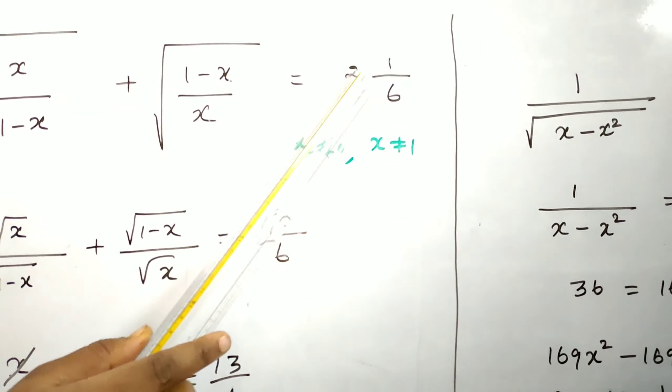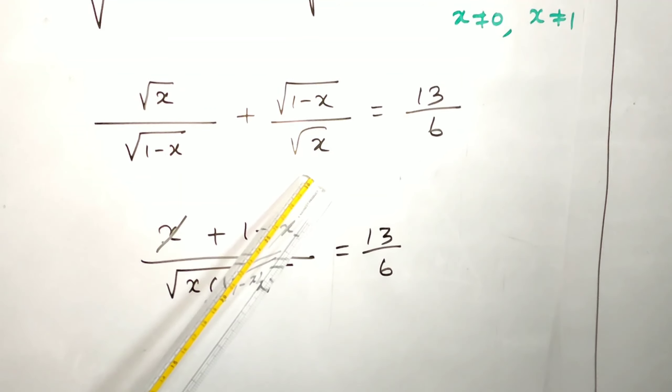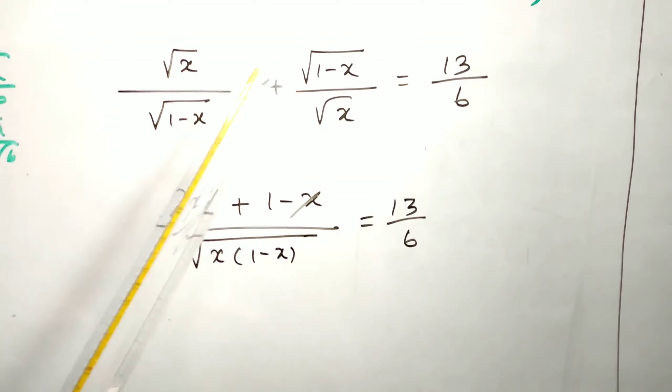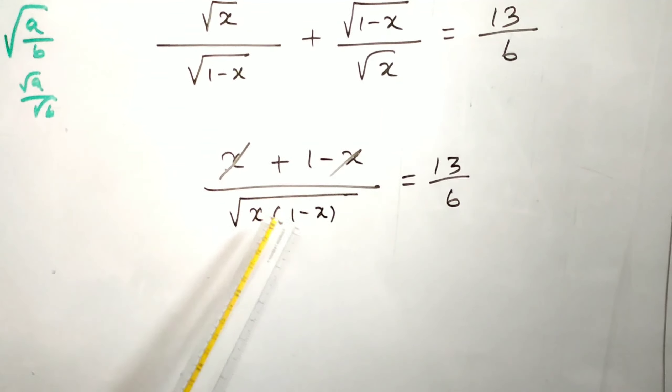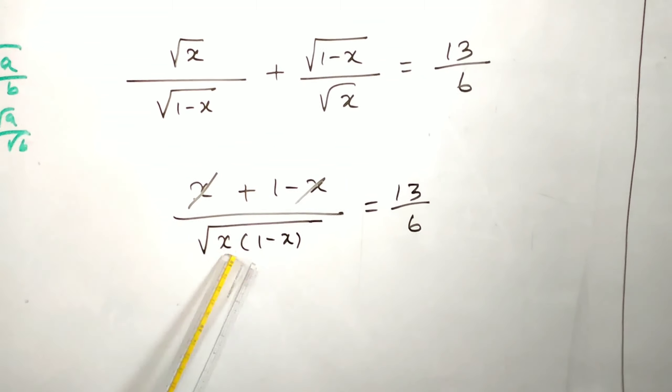Take cross multiplication. Root x times root x is simply x, then root of 1 minus x times root of 1 minus x is 1 minus x, by root of 1 minus x times root x is root of x times 1 minus x.